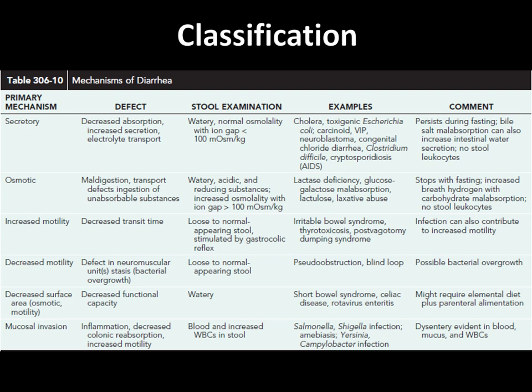The sixth mechanism is mucosal invasion — as the name says, this is because of inflammation. Good examples are infections due to Salmonella and Shigella. If you do a stool examination, blood, mucus, and WBCs are seen.